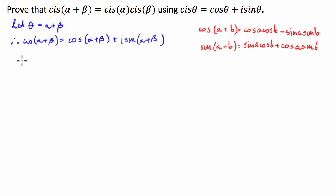From here, the proof gets fairly laborious, so I'm going to write it over to the side so we have enough space. The cos(α + β), using this identity, equals cos(α)cos(β) minus sin(α)sin(β), and then we add i times—using the second identity—sin(α)cos(β) plus cos(α)sin(β).